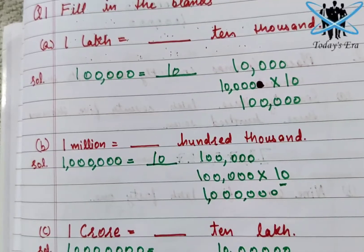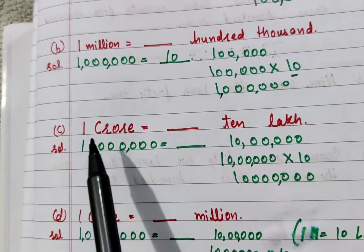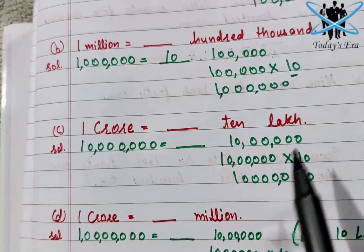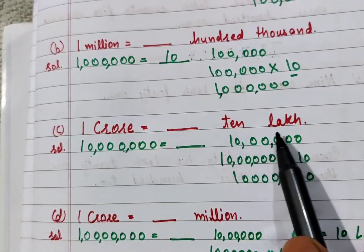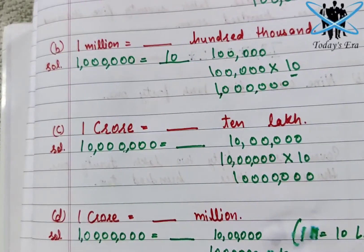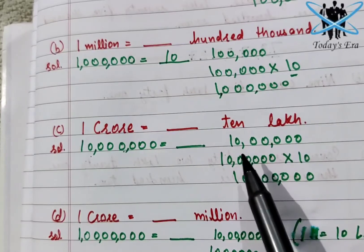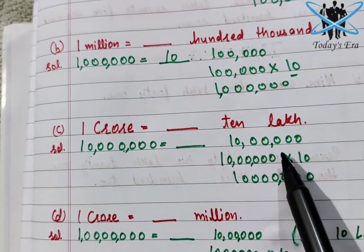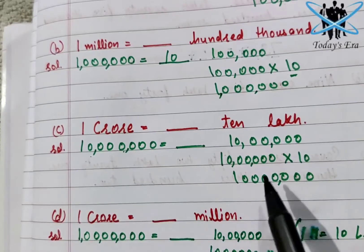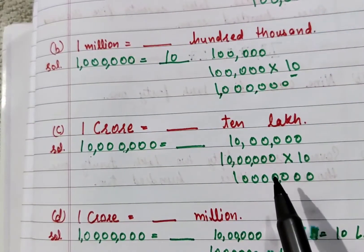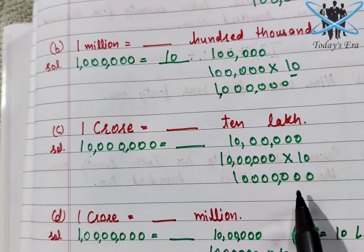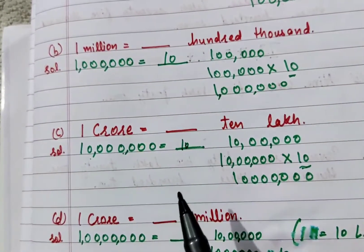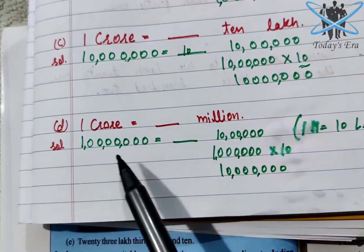For the third part: one crore equals to dash ten lakh. As you all know, one crore has seven zeros. Ten lakh — one lakh has five zeros, and ten adds one more zero, giving six zeros total. But crore has seven zeros. So we need to multiply ten lakh by ten to get seven zeros as well. Your answer here is also 10.